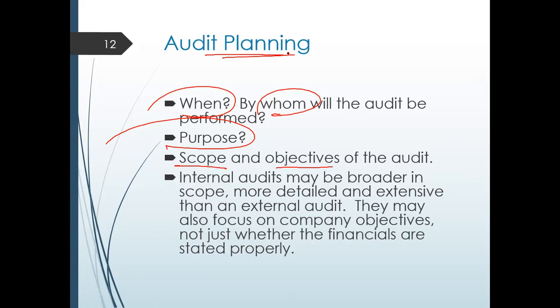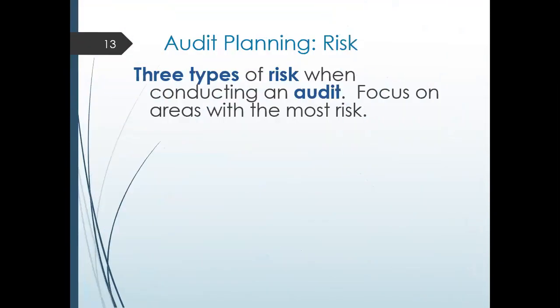Internal audit may be broader in scope, more detailed and extensive than external audit. They may also focus on company objectives, not just whether the financial statements are stated properly. Your external auditors conduct audit with randomness — for example, if they do vouching, they just check: is the transaction really existing? But the internal audit is everything. In your audit planning, you are expecting three types of risk that focus on different areas.